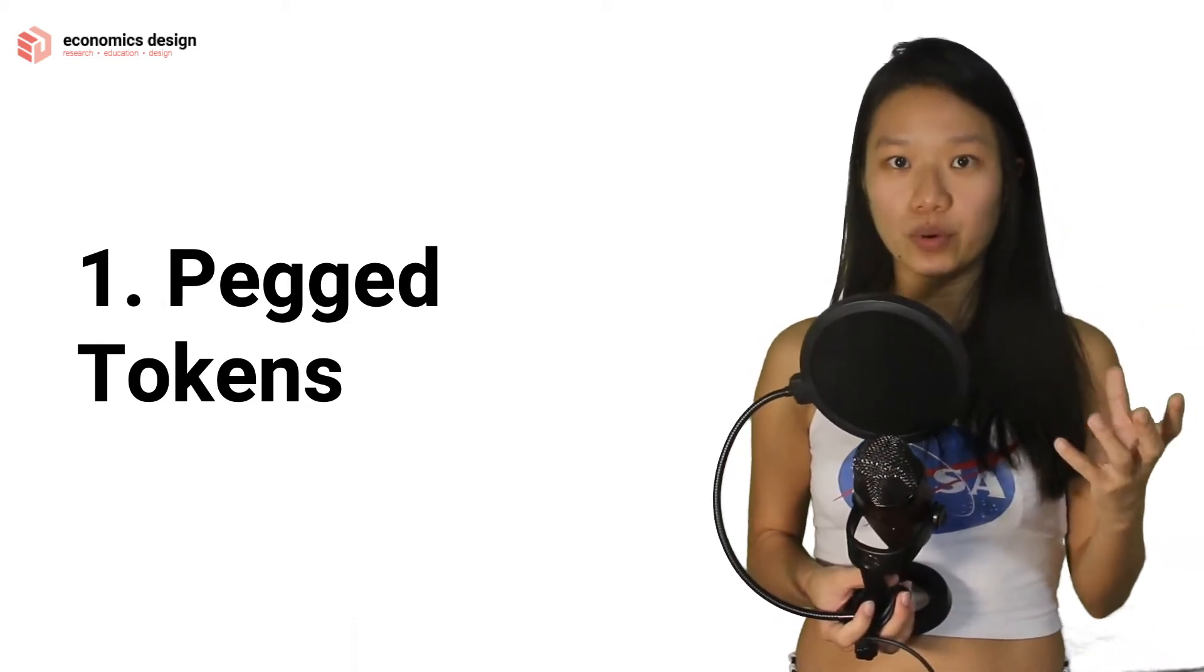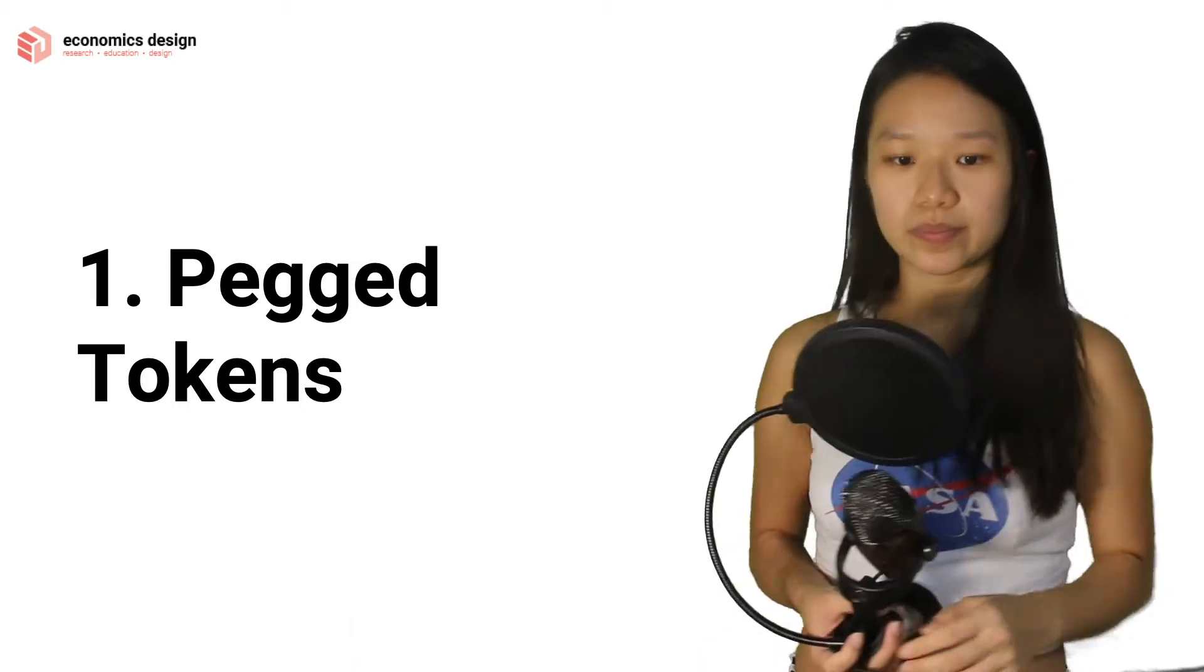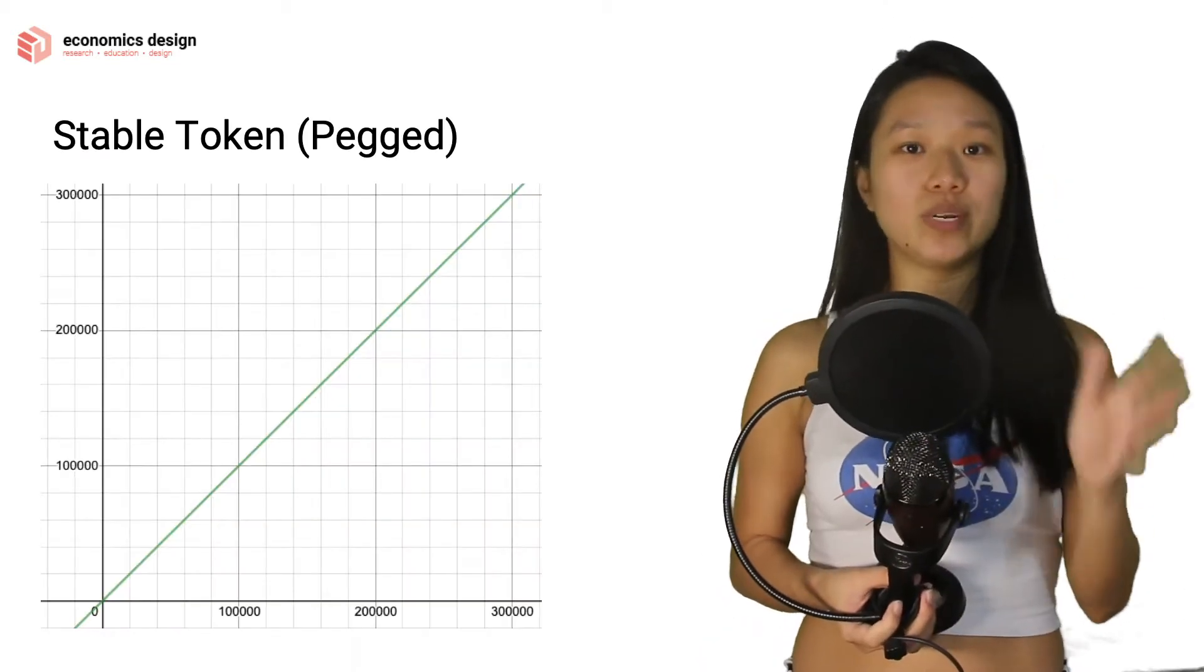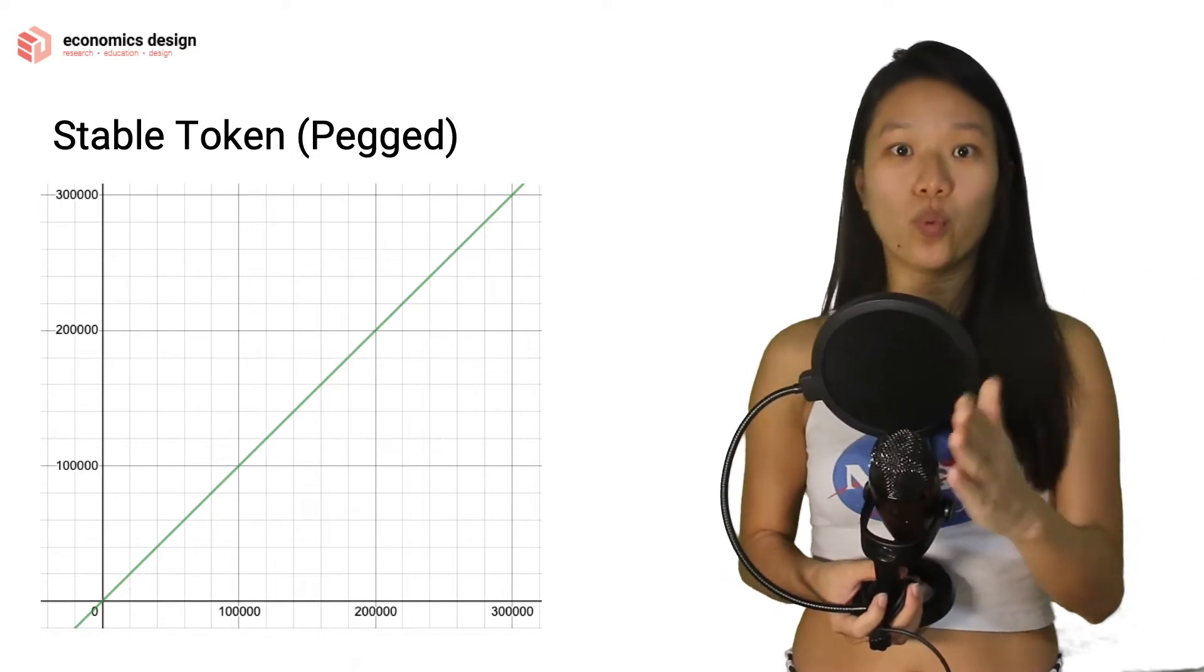Let's start with pegged tokens, which are your stable tokens, stable coins. Stable tokens peg is really simple - it's y equals x because you're pegging it one to one.